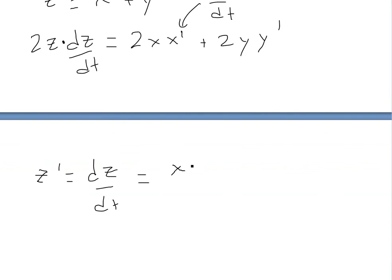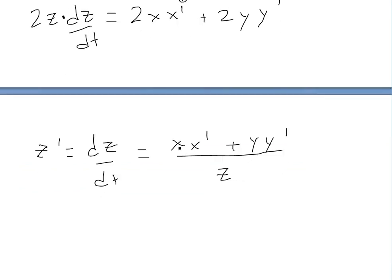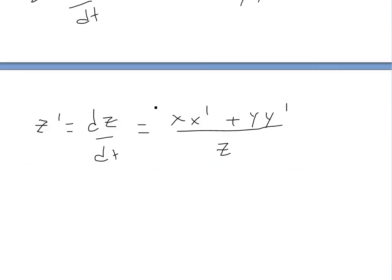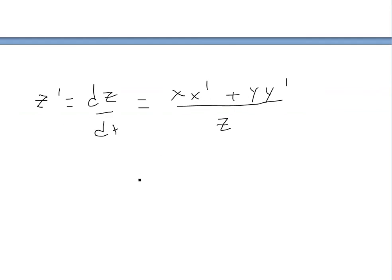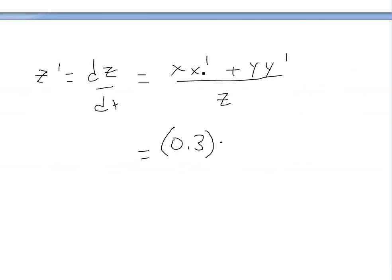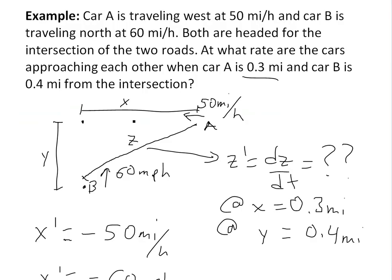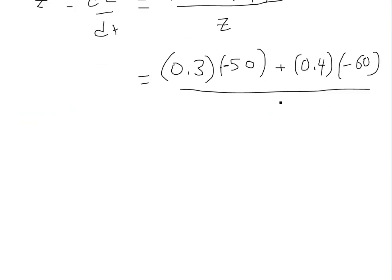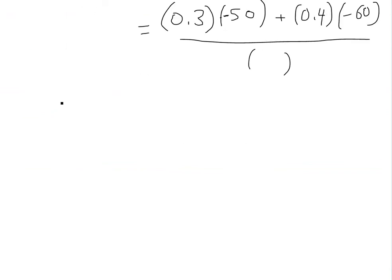Solving for dz/dt, we get: z prime equals (x times x prime plus y times y prime) divided by z. Now we plug in our values: x is 0.3 miles, x prime is negative 50 mph, y is 0.4 miles, y prime is negative 60 mph. We still need to find z, which we'll calculate using the Pythagorean theorem.